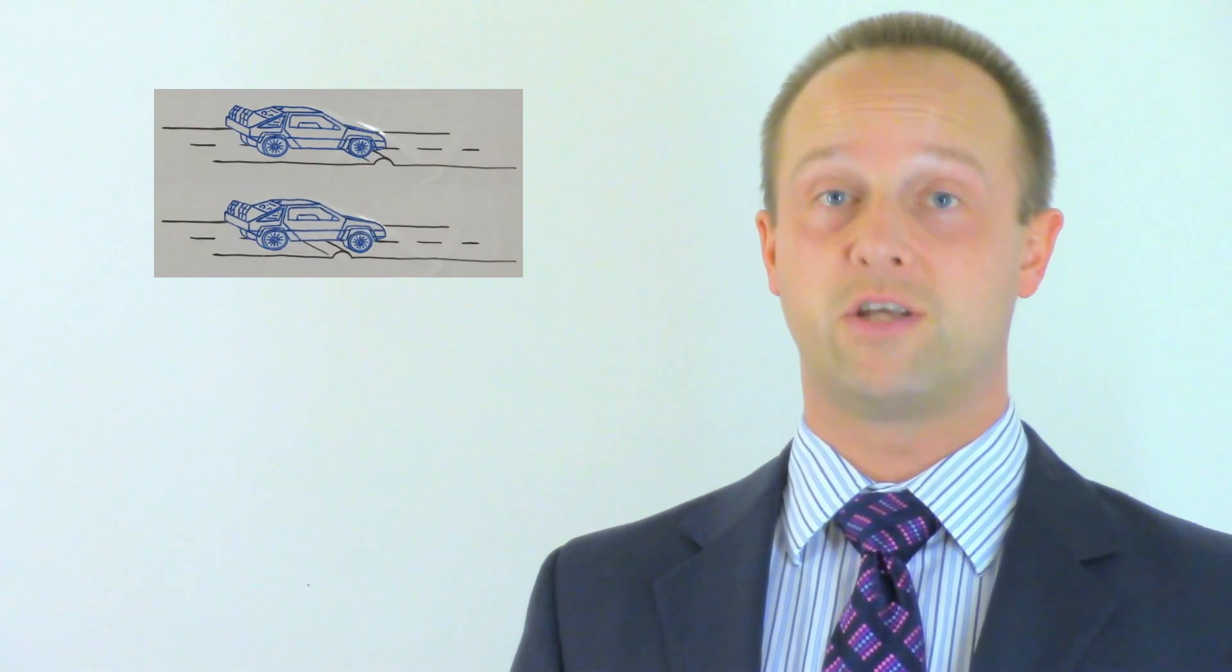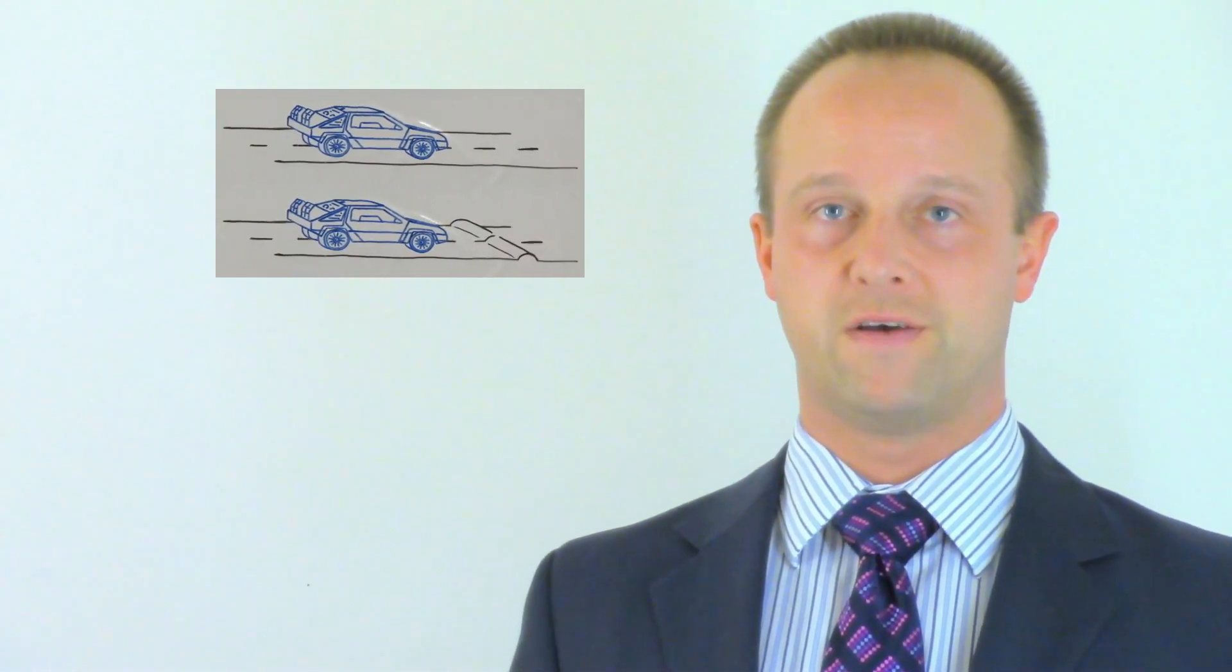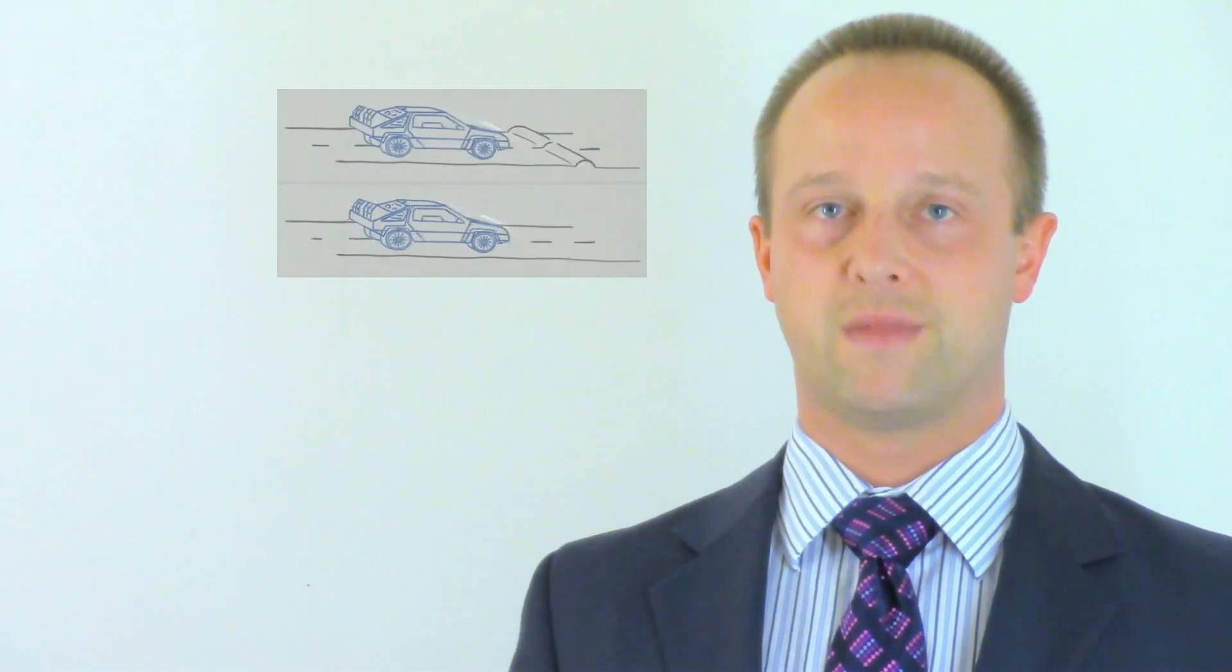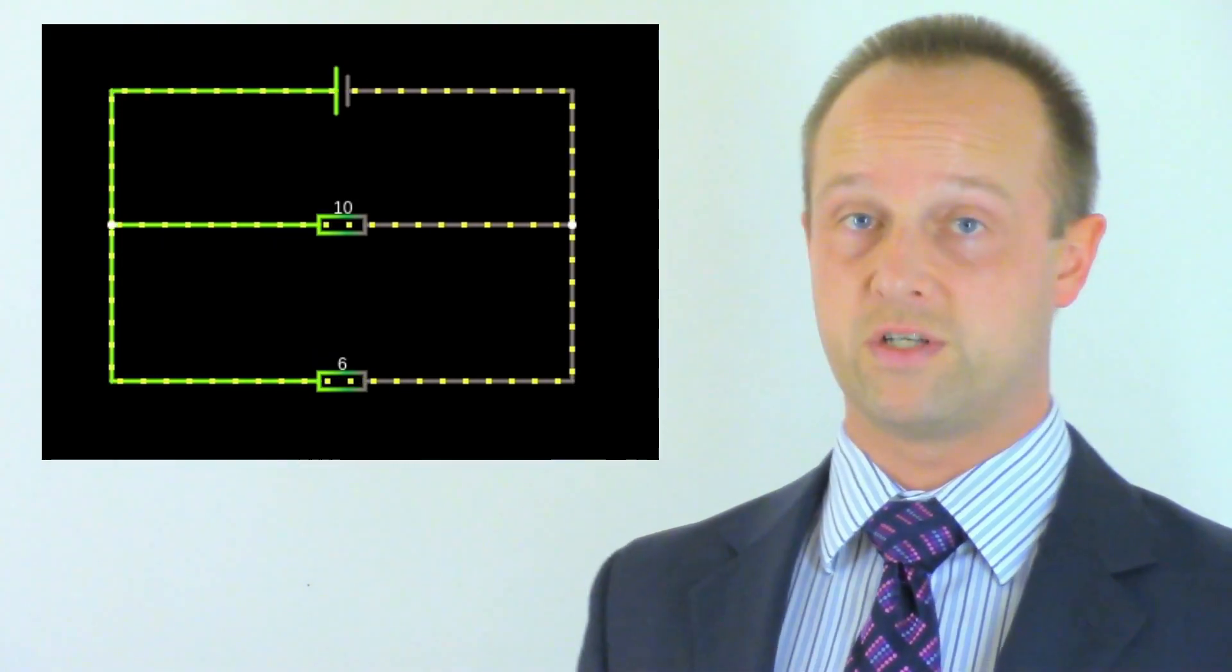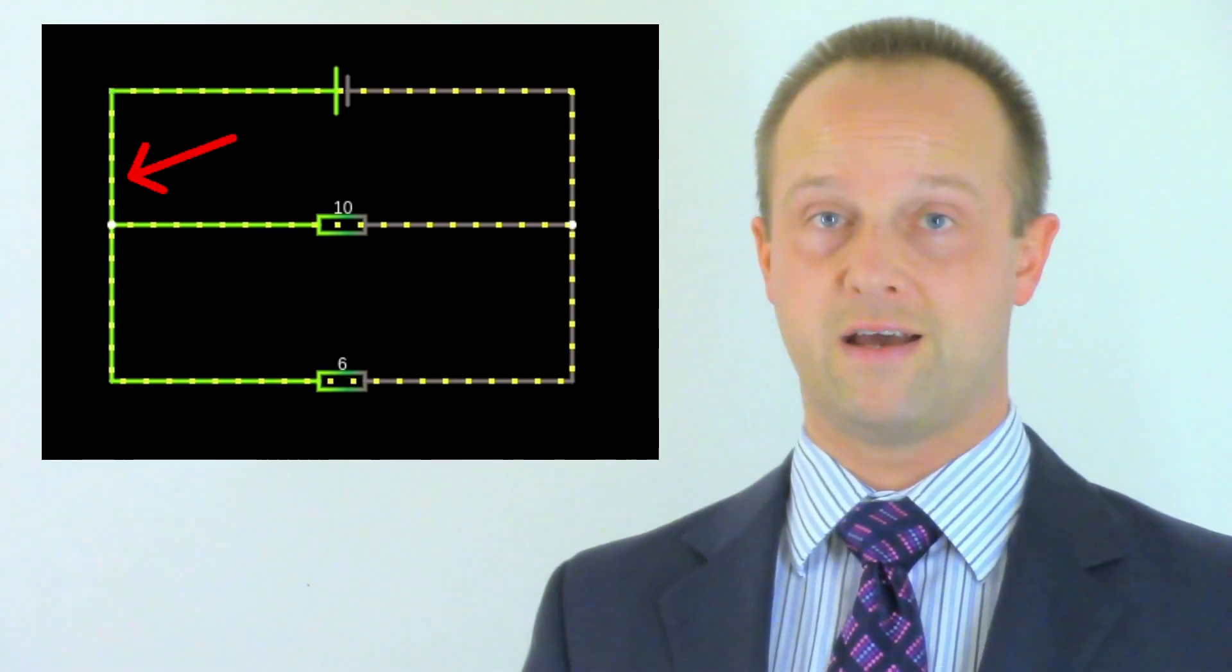Now the cars have two routes to take. Some of them take the first route and some of them take the second. Remember, the current is just the number of cars moving along the road. So the current before the junction where the road splits here, just gets shared out between the two routes.